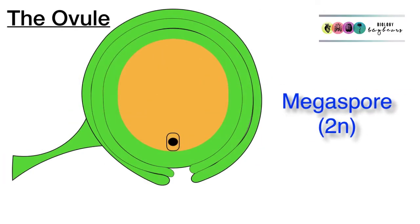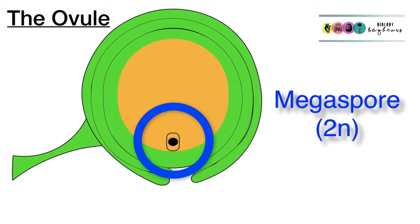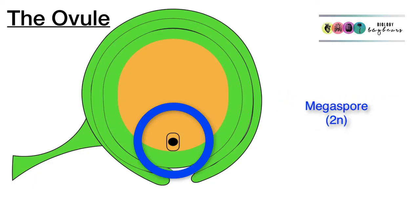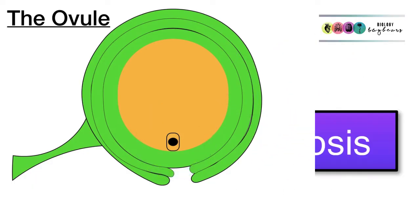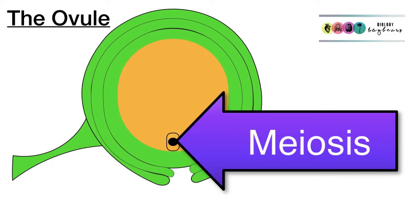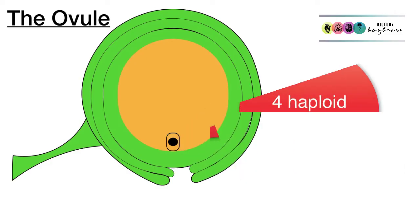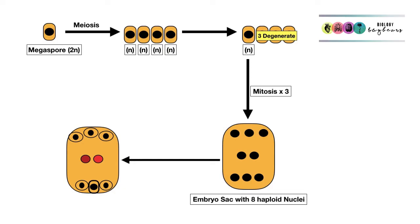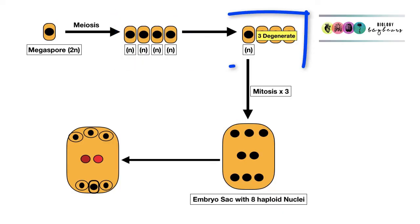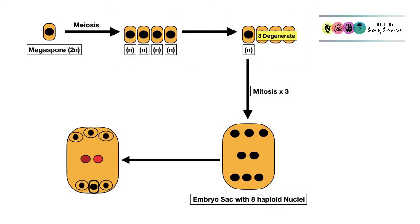The process begins with the diploid megaspore mother cell, which has two sets of chromosomes in its nucleus. This megaspore mother cell undergoes meiosis to produce four haploid cells. Three of these will then die off or degenerate, leaving one remaining haploid cell.